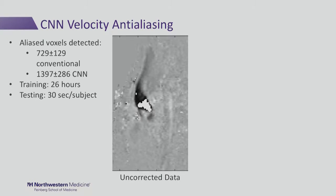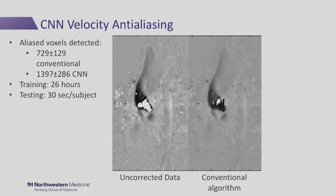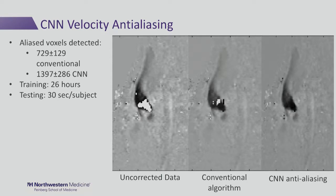For velocity anti-aliasing, we quantify performance by looking at the number of aliased voxels detected. With the conventional algorithm we detect around 729, as opposed to the convolutional neural network which detects almost 1,400 per dataset on average. Training takes about 26 hours and testing is about 30 seconds per subject. The conventional algorithm does an incomplete correction, while the convolutional neural network does a much better job inside the lumen of the aorta.